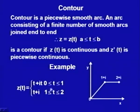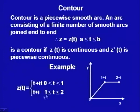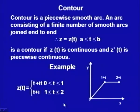At t = 1, the function z(t) is continuous because the limit from the left is 1+i and from the right is also 1+i. But the derivative at t = 1 is 1+i from the left and 1 from the right, so the derivative is discontinuous at this point — it is at most piecewise continuous. At all other points the derivative is continuous. So this is one example of a piecewise smooth arc.